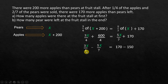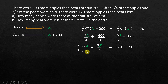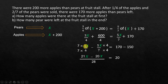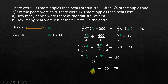The trick is using LCM. The lowest common multiple of 4 and 7 is 28. Multiplying 3x over 4 by 7 over 7 gives 21x over 28, and 5x over 7 by 4 over 4 gives 20x over 28. So 21x minus 20x over 28 equals 20, which is x over 28 equals 20. Bringing 28 to the other side: x equals 20 times 28, which is 560.